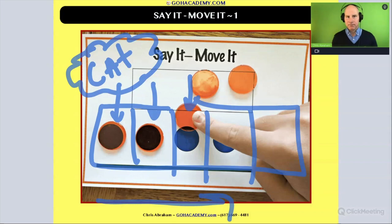So I'll repeat it for Say and Move It. The teacher says the word cat, the student repeats the word cat, then the student segments the sound while moving their finger and moving the circles into the boxes. And then they blend it cat.